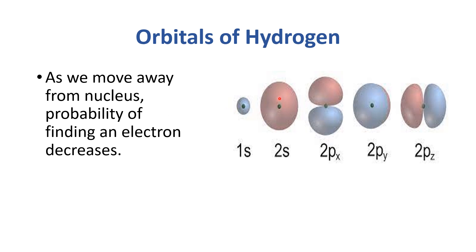Jitna aap nucleus ke kareeb rahenge, utni electron ko find karne ki jo probability woh zyada rahegi. Jis se se door jate jayenge, electronic cloud thin hota jayega. Waise waise jo hai woh probability bhi kam hoti jayegi.